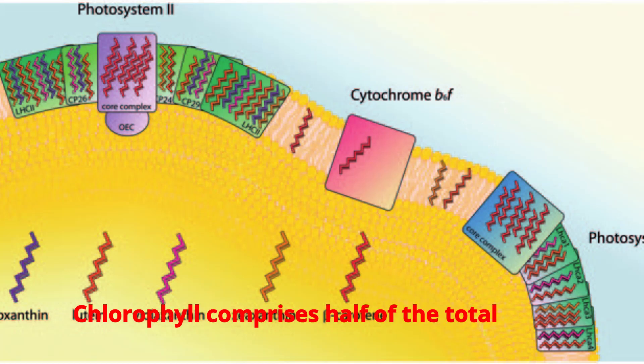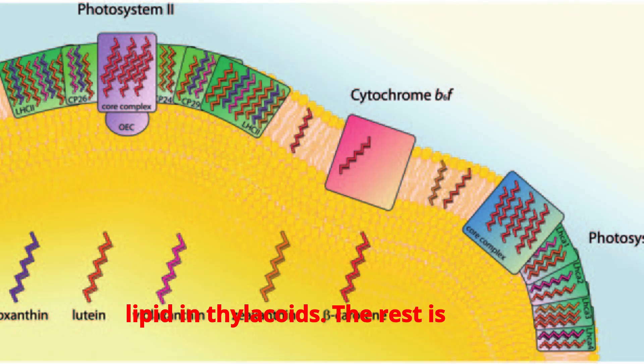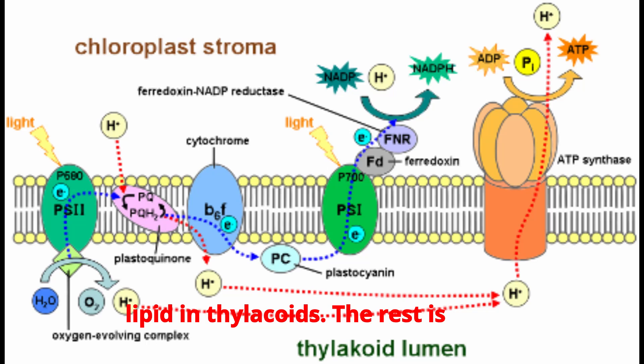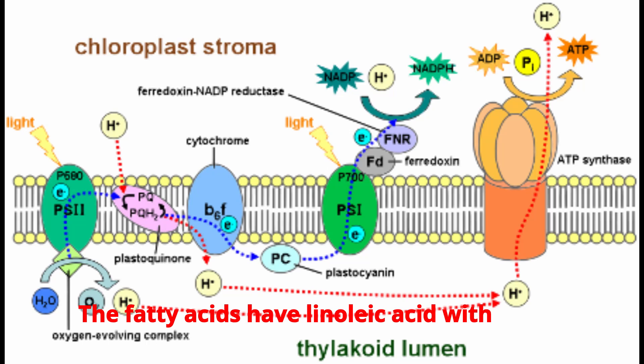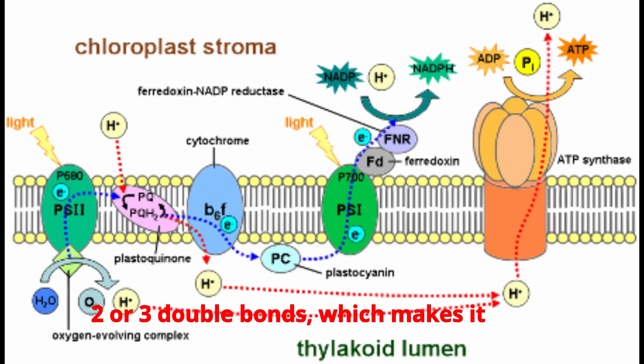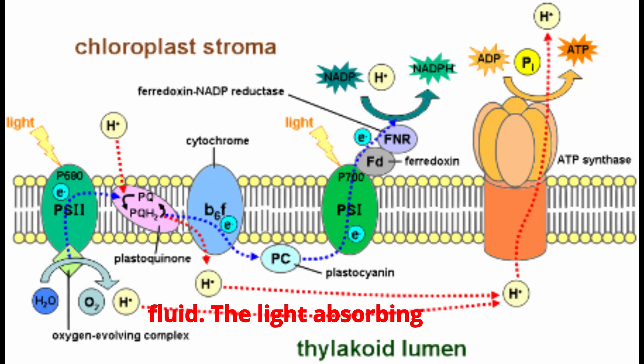Chlorophyll comprises half of the total lipid in thylakoids; the rest is glycolipid and phospholipid. The fatty acids have linoleic acid with two or three double bonds, which makes it fluid.